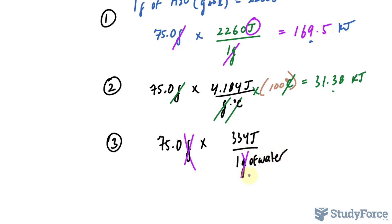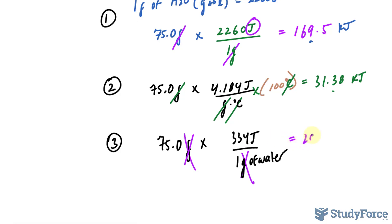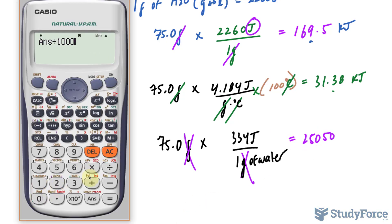This will cancel out with that, and using our calculator once more, 75.0 times 334, and that gives us 25,050. We'll divide this by 1,000 just like how we did with the others, 25.05.